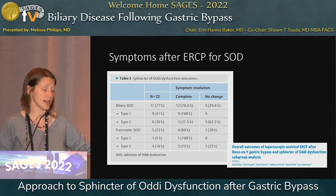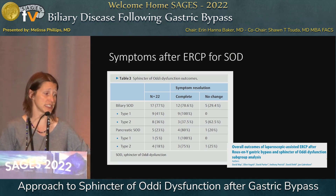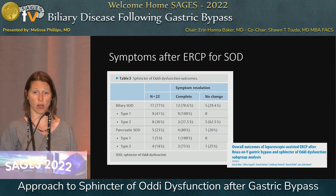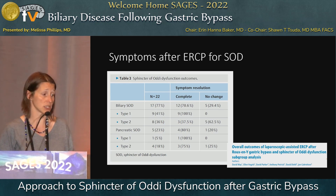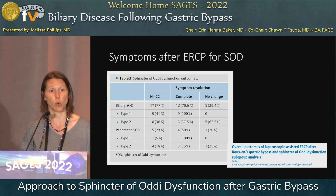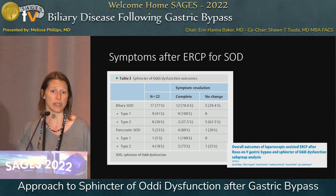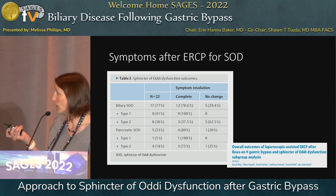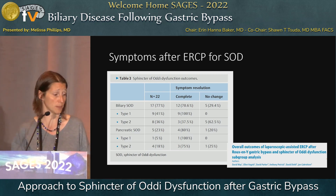They classified it by biliary type versus pancreatic type, looking specifically at the type 1 and type 2 qualifications. What I think is interesting is that the type 1s — the ones you would expect to have more improvement — are doing relatively well in this paper's outcomes.